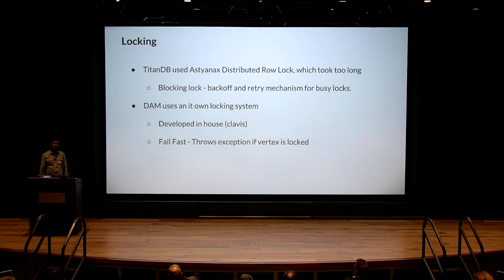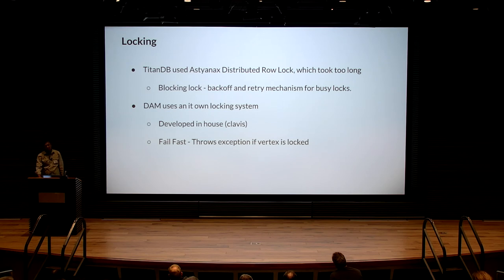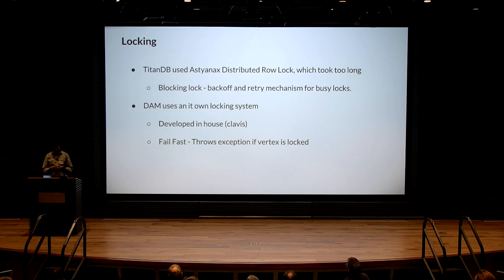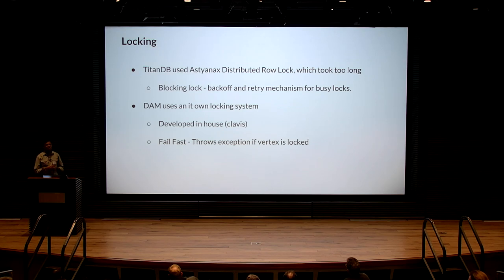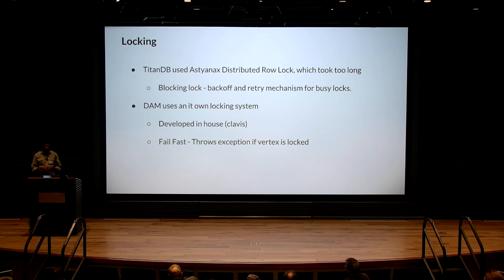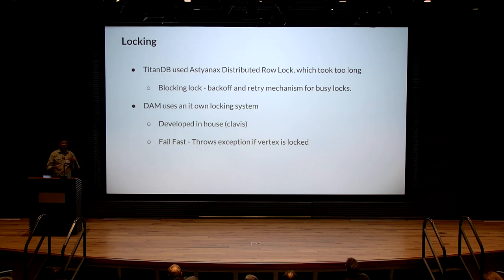Another change was locking. Out of the box, Titan DB uses Astyanax distributed row locking, which was taking too long — it's a blocking lock with exponential backoff and retry, causing a lot of problems where updates were taking a long time. So we removed that and use our own in-house locking system called Clevis. The idea was to fail fast — if something happens we fail fast, the client knows whether to retry or ignore it, for example if it's updating something already updated.